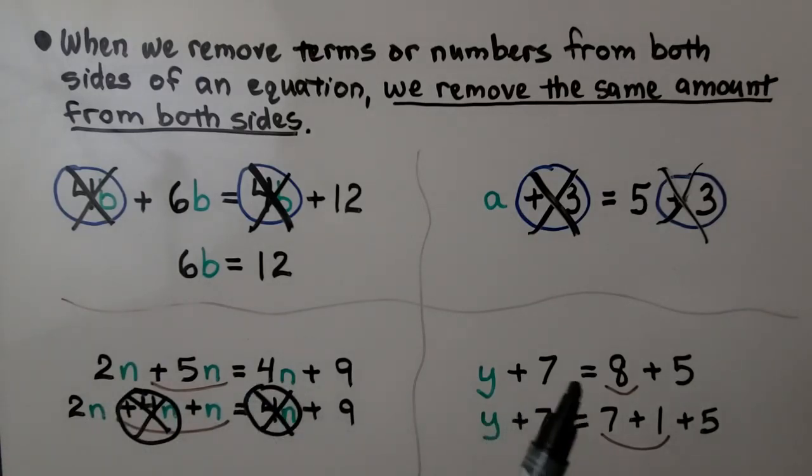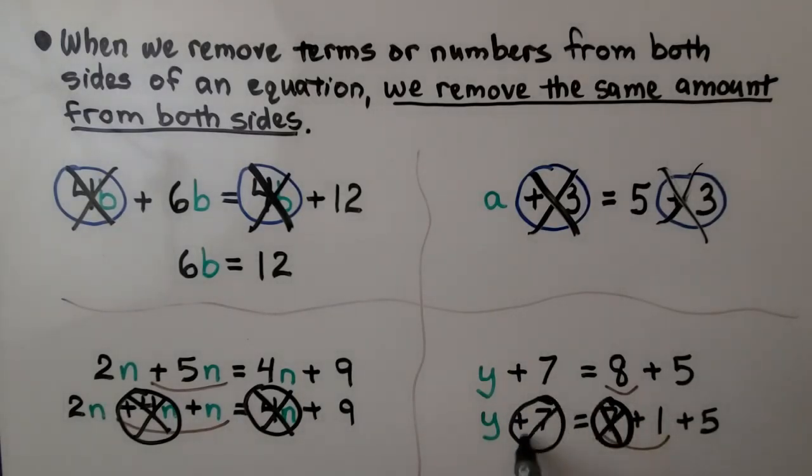For this one, we don't have an 8 on this side. We don't have a 7 on this side, but the 8 is great enough to be able to take 7 away if we split it into a 7 plus 1. So now we can take away this 7 and this 7 and we can see y is equal to 1 plus 5.